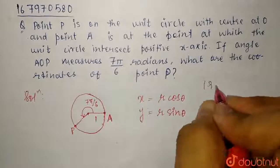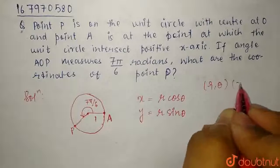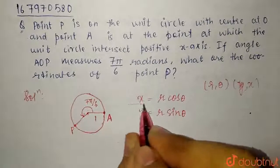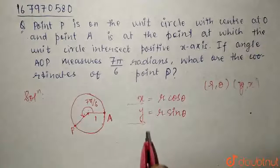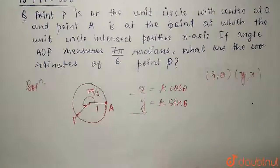Polar coordinates are R, theta and rectangular coordinates are X, Y. This is how we convert polar coordinates into rectangular coordinates. This is the formula.